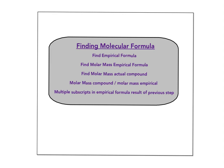So what if I ask you to find the molecular formula? That's the true formula of the compound. First, find the empirical formula using our rhyme: percent to mass, mass to mole, divide by small, multiply till whole. Then find the molar mass of the empirical formula. By dividing the molar mass of the actual compound — which is usually given — by the molar mass of the empirical, you get how many times larger the molecular formula is. Then multiply the subscripts of the empirical formula to get the molecular formula.